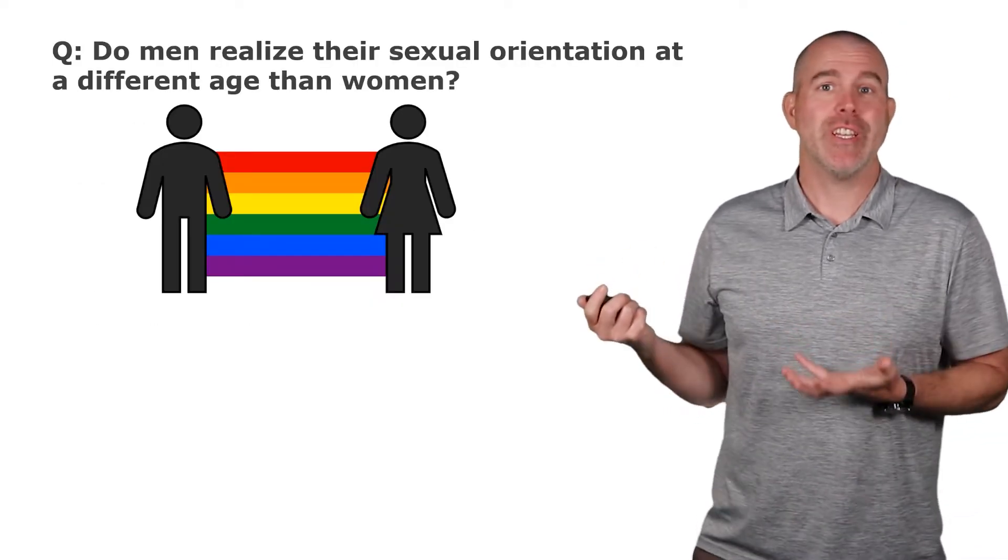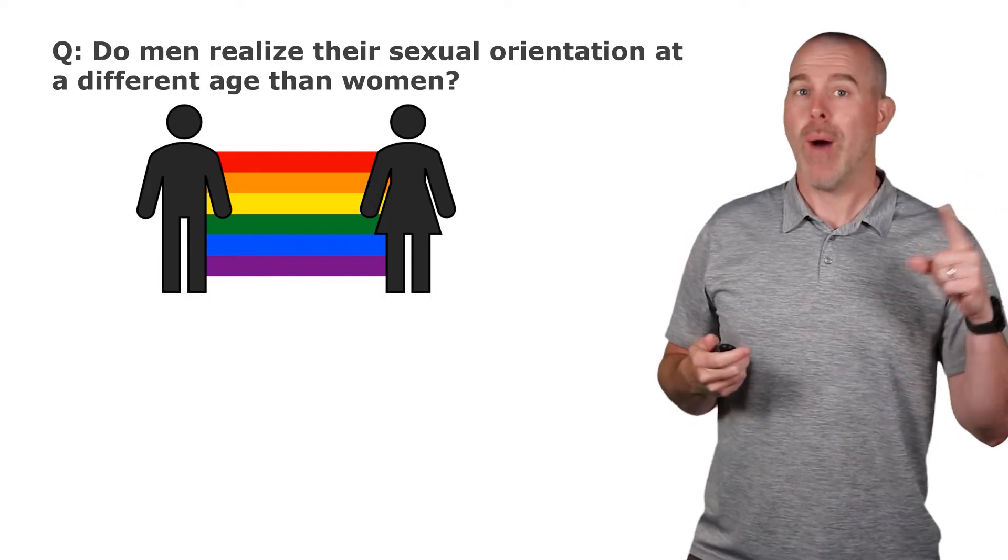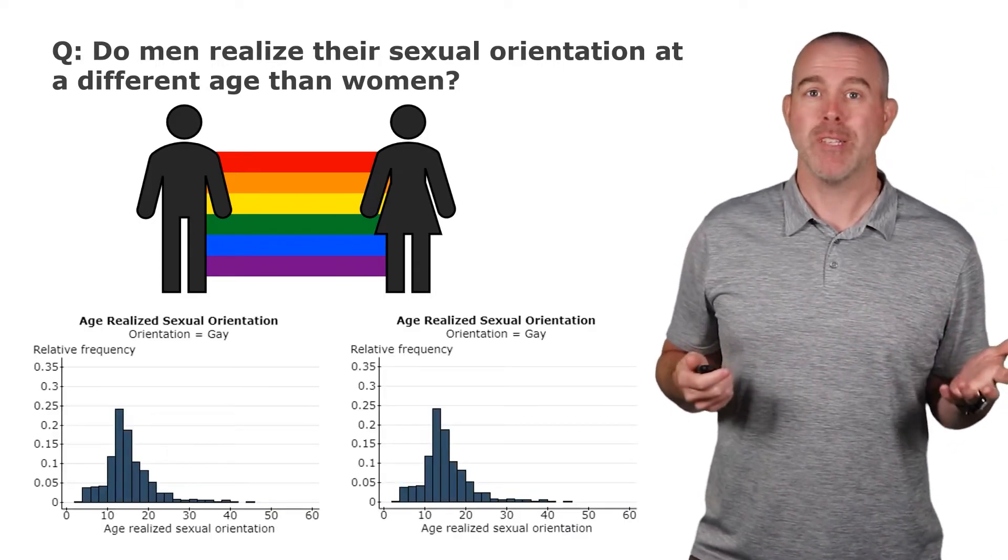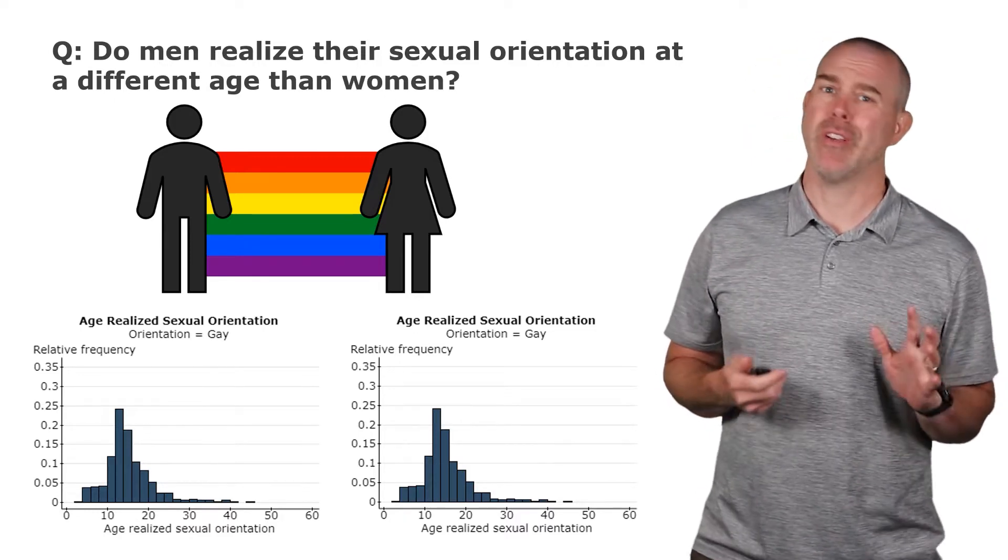Now, my first thought here was to continue with this example and do a test that the variances were equal. Now, our requirement is that the populations must be normally distributed. Those are skewed right. OK, can't do that.